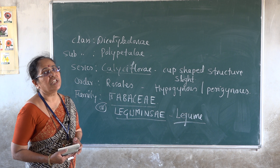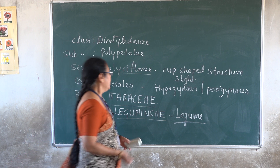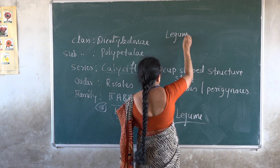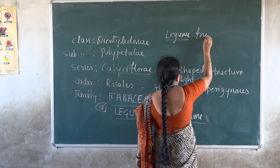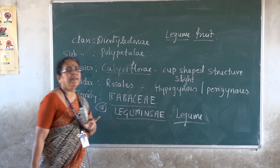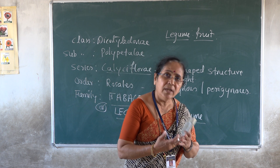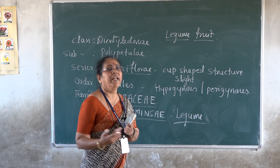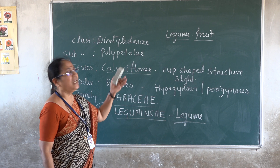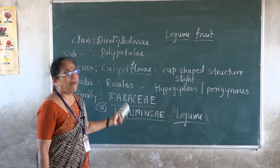Fabaceae is the second largest family of dicots — the first largest family of dicots is Asteraceae. All members with legume type of fruit fall under family Fabaceae. The legume fruit develops from a monocarpellary, unilocular, superior ovary. The fruit has both dorsal and ventral sutures, springs open, and releases the seeds. Examples include all kinds of beans, black gram, green gram, Bengal gram.